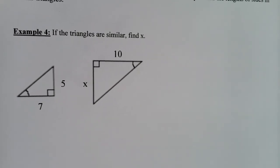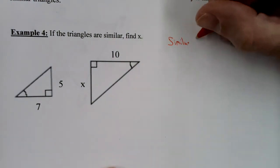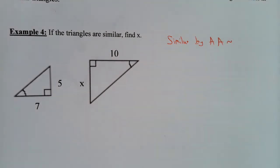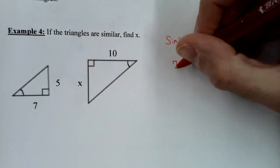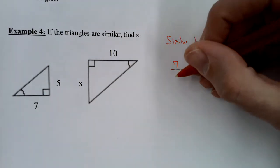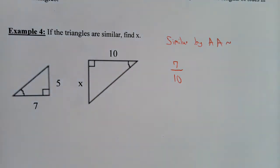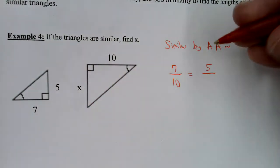Example four: if the triangles are similar, find X. The triangles are similar by angle-angle similarity, so we can find X. If they're not similar, you cannot find X. Let's write our proportion and solve. Make all numerators come from one triangle and all denominators from the other. I'll put 7 over its corresponding side from the other triangle, which is 10, because 7 corresponds to 10.